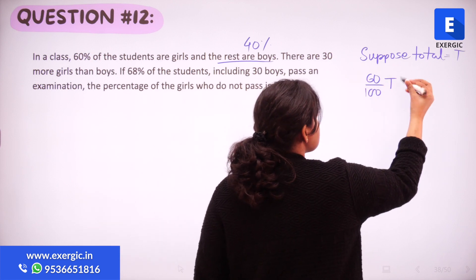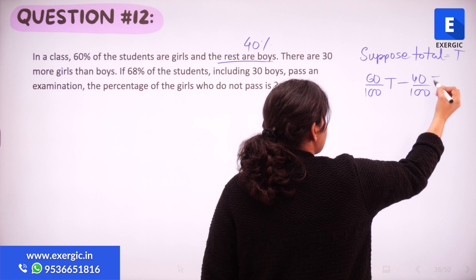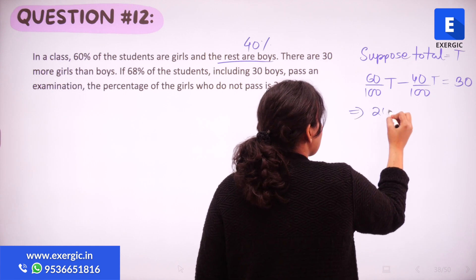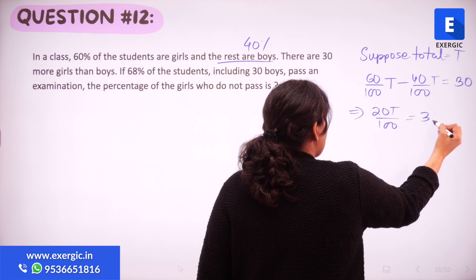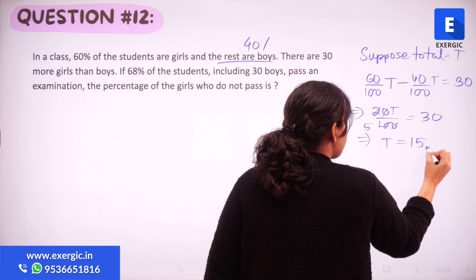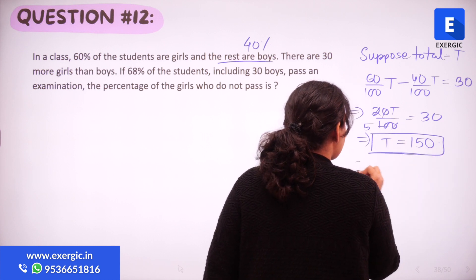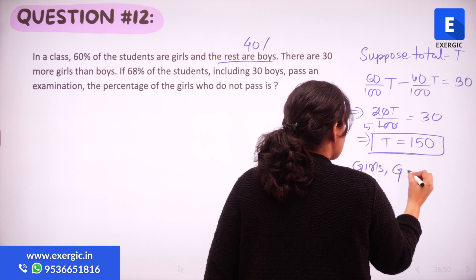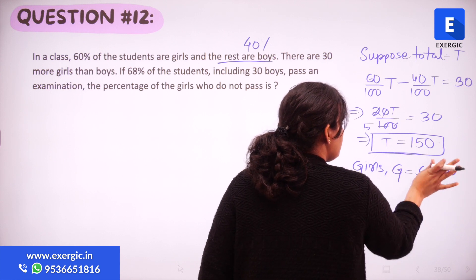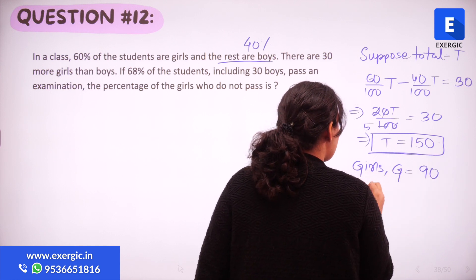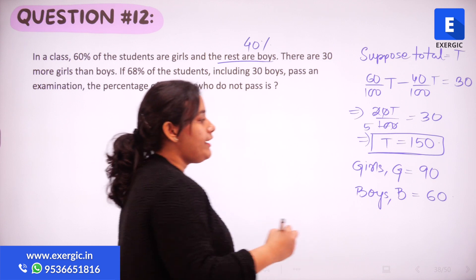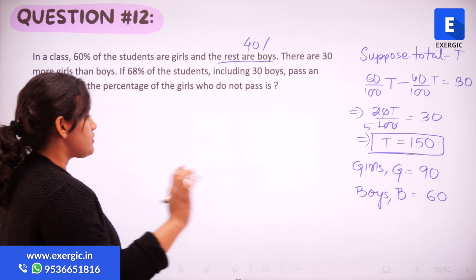The number of girls minus the number of boys equals 30. Solving this gives us 20t/100 = 30, which means the total number of students is 150. So the number of girls is 60% of 150, which is 90, and the number of boys is the remaining 60.